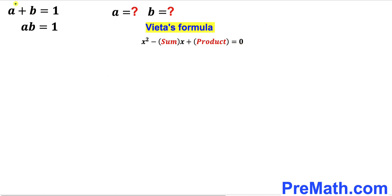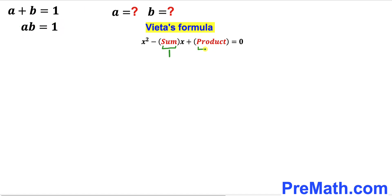In our case, the sum of the two roots equals to 1, so I'm going to substitute this sum with 1. Likewise, the product of the two roots is 1 as well, so I'm going to replace this product with 1. Our resulting quadratic equation equals to 0.